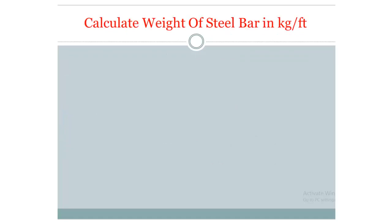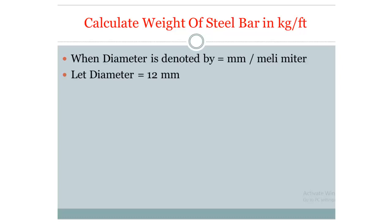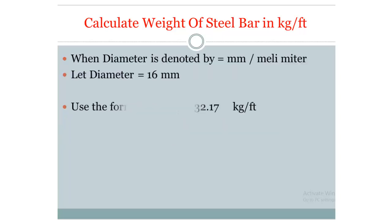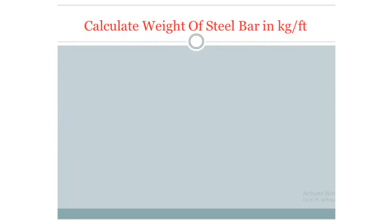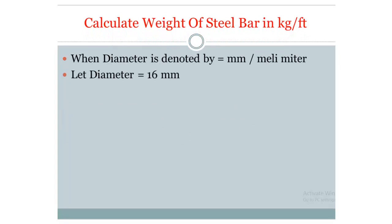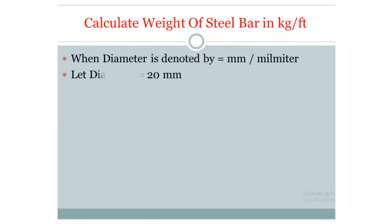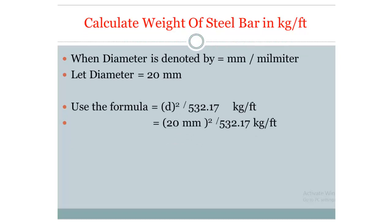For 12 mm diameter, using the same formula, the result is 0.27 kg per feet. When D equals 16 mm, the output is 0.48 kg per feet. When D equals 20 mm, the output is 0.75 kg per feet.